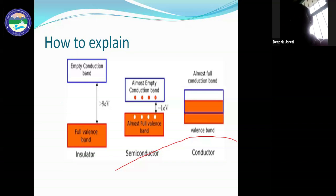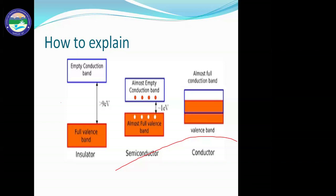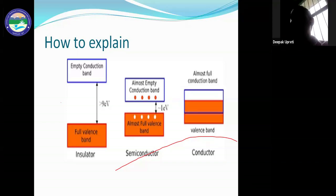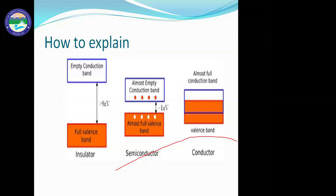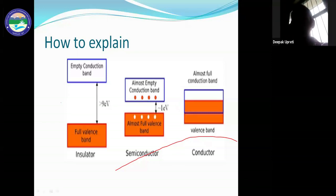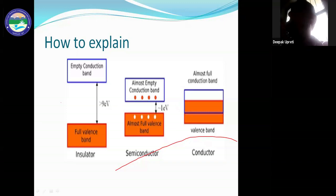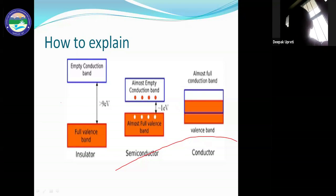At zero degrees Kelvin, a semiconductor acts as an insulator because the conduction band is almost empty and the valence band is almost full — valence electrons do not have sufficient energy to jump to the conduction band. So at very low temperatures, a semiconductor will act as an insulator.